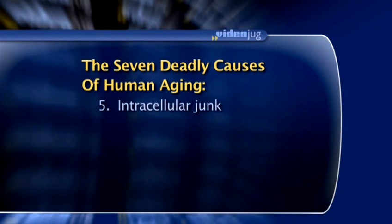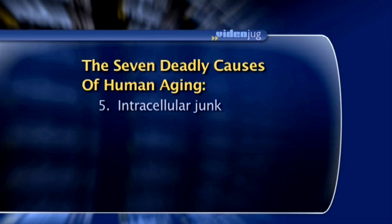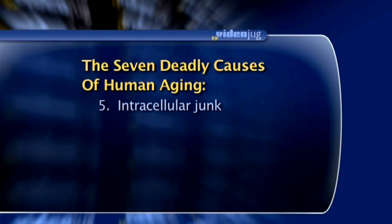Number five is the accumulation of garbage — the accumulation of indigestible molecules inside the cell. This is a really important one for a number of the most significant age-related diseases, such as Alzheimer's, atherosclerosis, and macular degeneration. Essentially, stuff accumulates in the cell because we don't have the enzymes to get rid of it, and it eventually gets in the way — just like not taking out your garbage for a month.